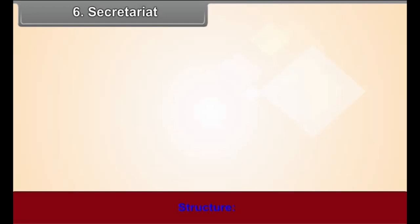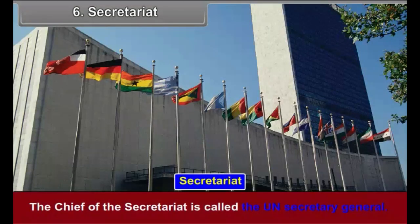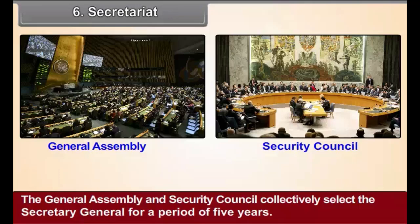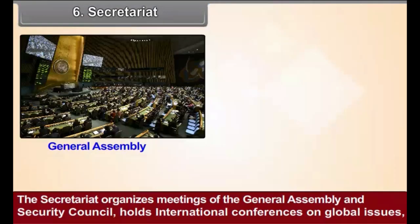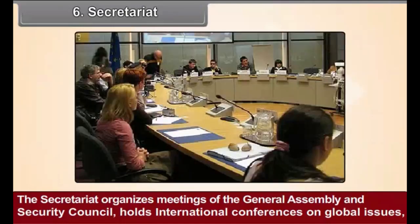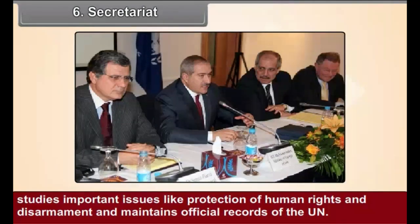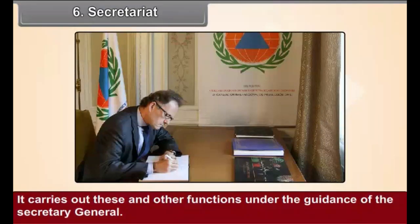Secretariat — Structure: The Secretariat has been created to look after the administrative functions of the UN. The Chief of the Secretariat is called the UN Secretary General. The General Assembly and Security Council collectively select the Secretary General for a period of 5 years. Functions: The Secretariat organizes meetings of the General Assembly and Security Council, holds international conferences on global issues, studies important issues like protection of human rights and disarmament, and maintains official records of the UN. It carries out these and other functions under the guidance of the Secretary General.